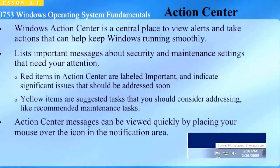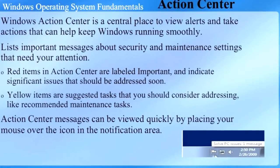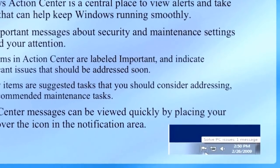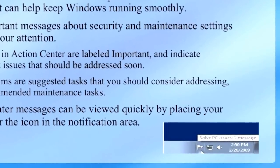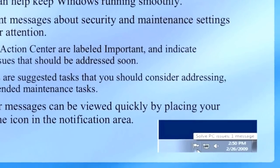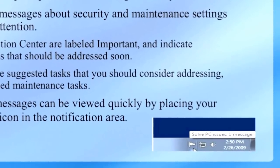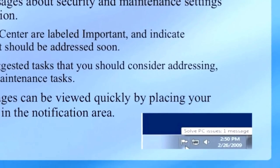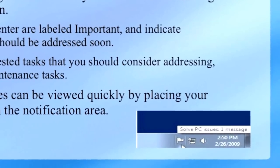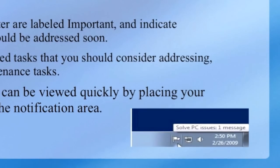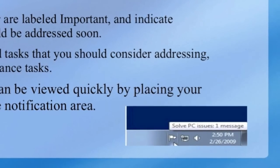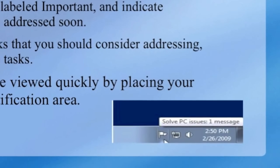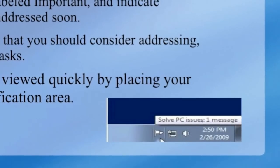The Windows Action Center is a central place to view alerts and take actions that can help keep Windows running smoothly. It lists important messages about security and maintenance settings that need your attention. Red items in the Action Center are labeled important and indicate significant issues that should be addressed soon. Yellow items are suggested tasks you should consider addressing, like recommended maintenance tasks. Action Center messages can be viewed quickly by placing your mouse over the icon in the notification area, as indicated in the slide.